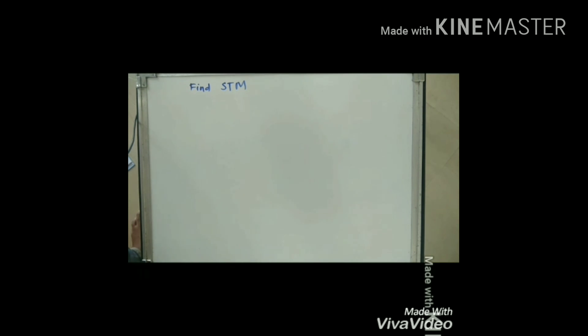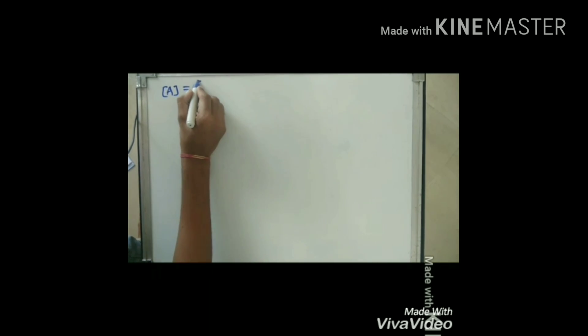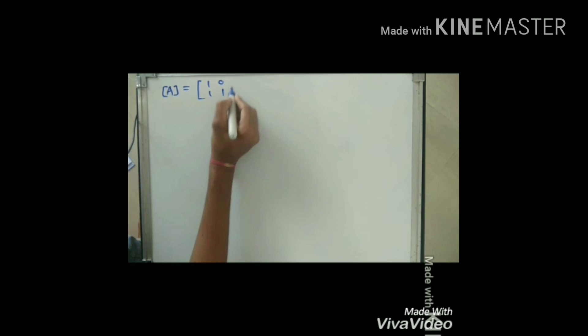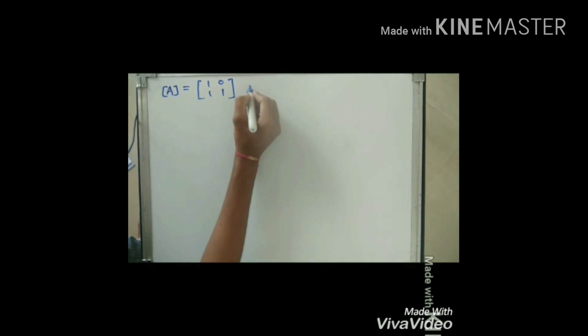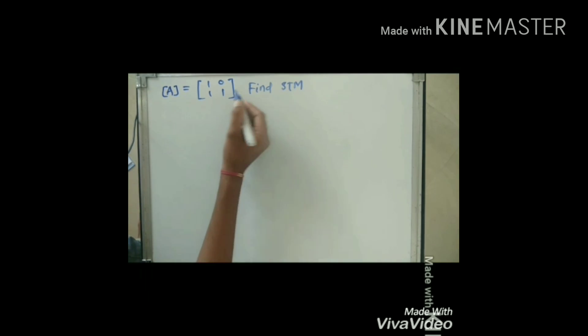To understand how to find the state transition matrix, I will take one example. The system matrix A is equal to [[1,1],[0,1]] and we are asked to find the state transition matrix. In this example, input is absent, so this is a simple example.